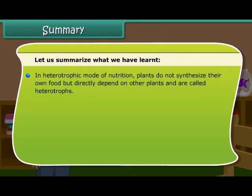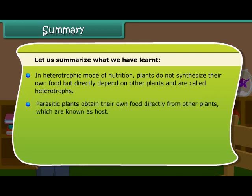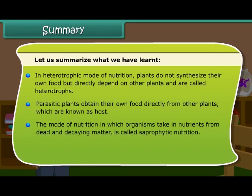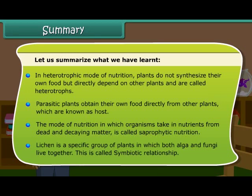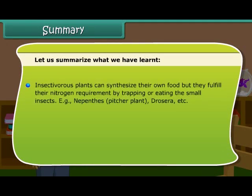In heterotrophic mode of nutrition, plants do not synthesize their own food but directly depend on other plants, and are called heterotrophs. Parasitic plants obtain their food directly from other plants, which are known as the host. The mode of nutrition in which organisms take in nutrients from dead and decaying matter is called saprophytic nutrition. Lichen is a specific group in which both algae and fungi live together in a symbiotic relationship. Insectivorous plants can synthesize their own food but fulfill their nitrogen requirement by trapping or eating small insects. For example, Nepenthes, pitcher plant, Drosera, etc.